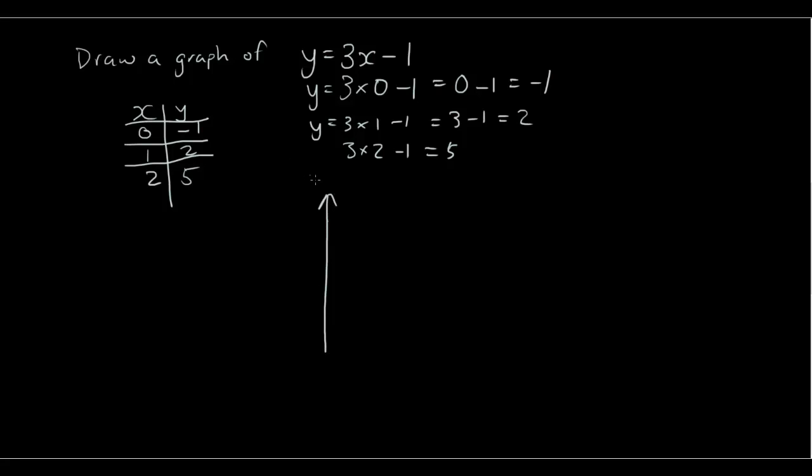So we have the y-axis. The x-axis. When x is 0, y is negative 1. So that's our first point here. When x is 1, y is equal to 2. So that's our second point. And when x is equal to 2, y is equal to 5. And that's our third point. Again, you can see our dots line up to a straight line. So this straight line is the equation y equals 3x minus 1.